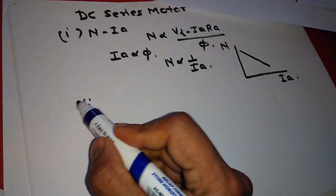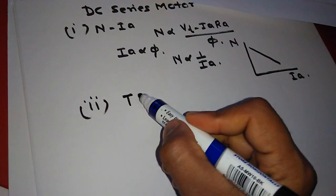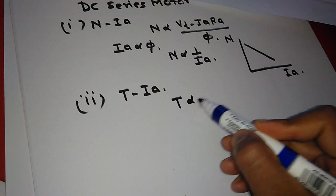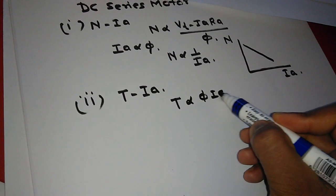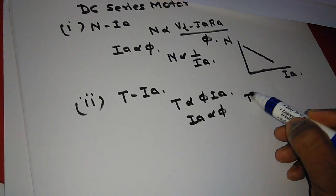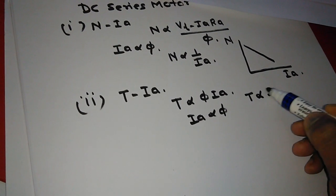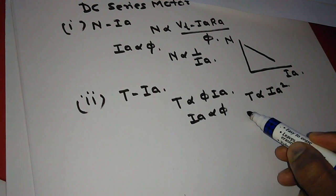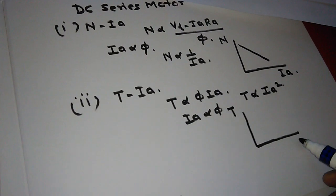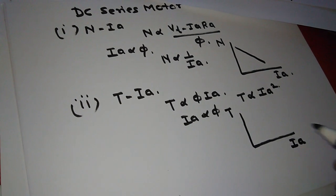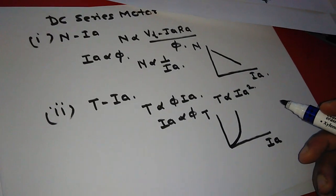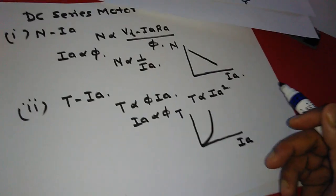Now we will plot the characteristic between torque versus armature current for the DC series motor. We know torque is proportional to phi times Ia, and in the series motor Ia is proportional to phi. So we get the relationship T is proportional to Ia squared — a parabola equation. Plotting torque on the y-axis and Ia on the x-axis, we get a parabola characteristic.